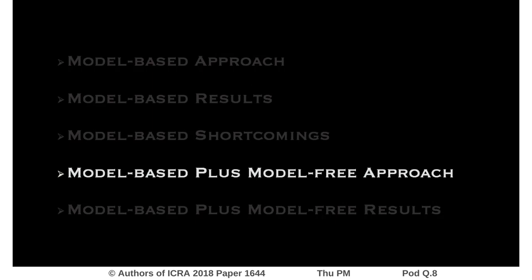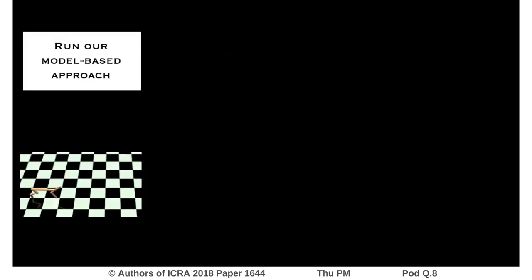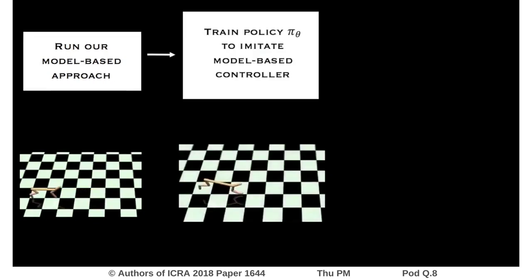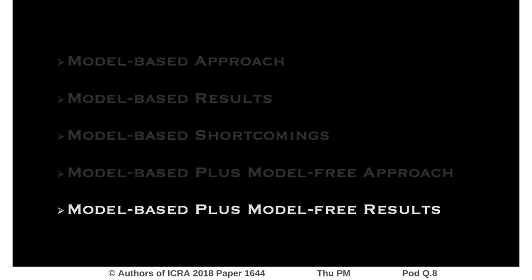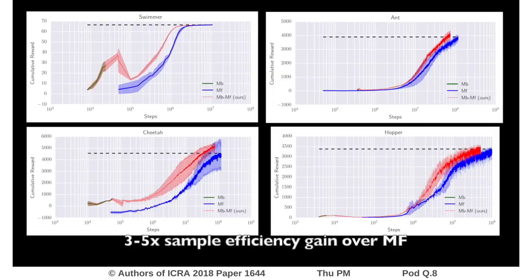To achieve higher rewards while maintaining sample efficiency, we use the model-based approach as a burn-in for faster model-free learning. We first run our model-based approach to achieve steady forward-moving gaits. We then train a policy to imitate that behavior. Finally, we run a model-free algorithm on the pre-trained policy in order to achieve the desired high performance. On multiple agents, our hybrid method is 3-5 times more sample efficient than the model-free method.